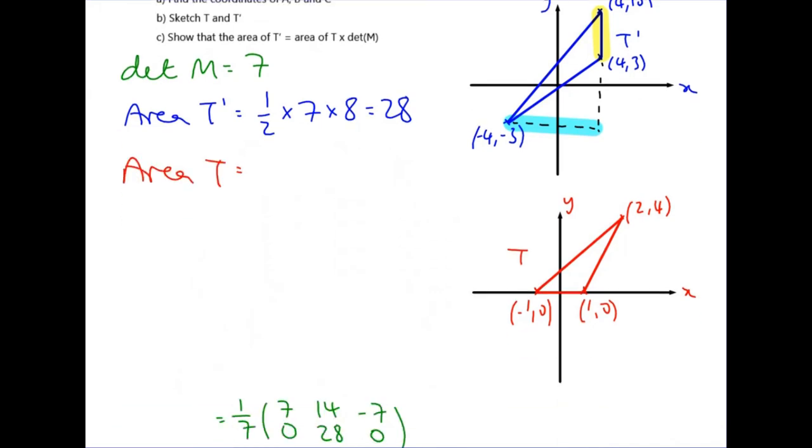And if you work it out, that gives you 28 units squared for the area of T dash. We do the same thing for the area of T, so this time I'm going to use this side as the base and then this is the perpendicular height. That's a half times the base is the difference between those two x coordinates, it's 2, and the height is just the y coordinate at this point which is 4, which gives us the area of T is 4. Therefore, area of T times the determinant of M is equal to the area of T dash, because that is 4 times 7 which is 28.